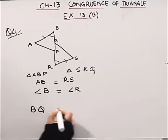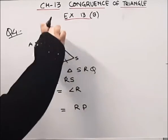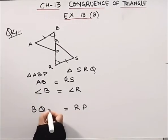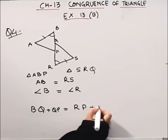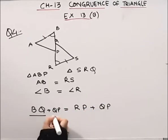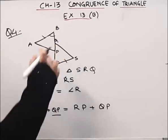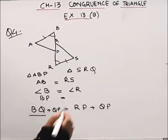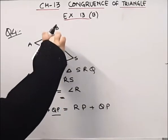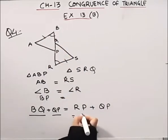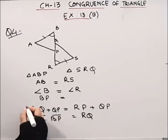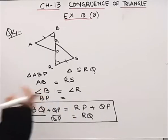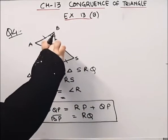We also have BQ is equal to RP. If we add QP to both sides — BQ plus QP becomes BP, and RP plus QP becomes RQ. So we get BP is equal to RQ. This gives us a clue for applying the congruence criteria.